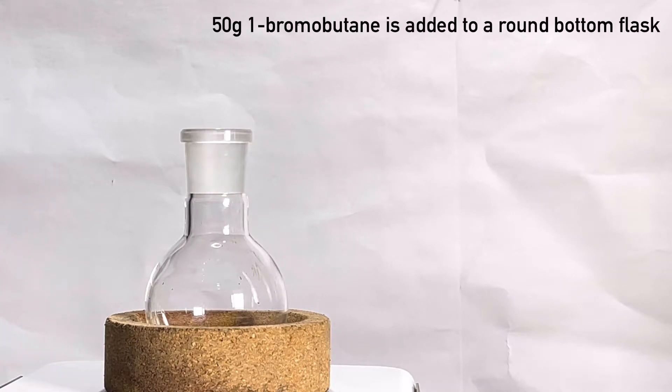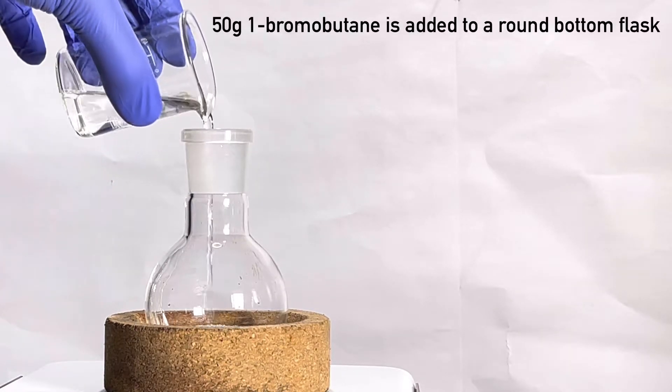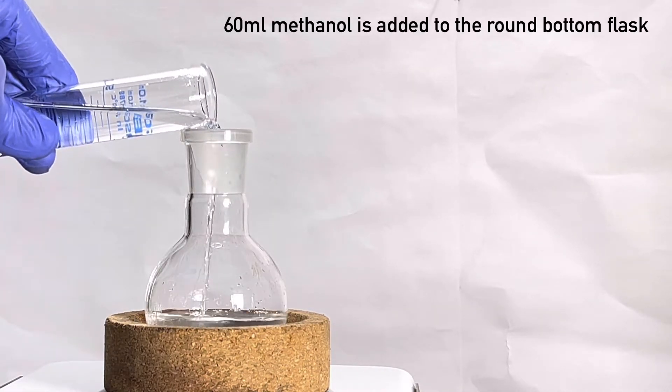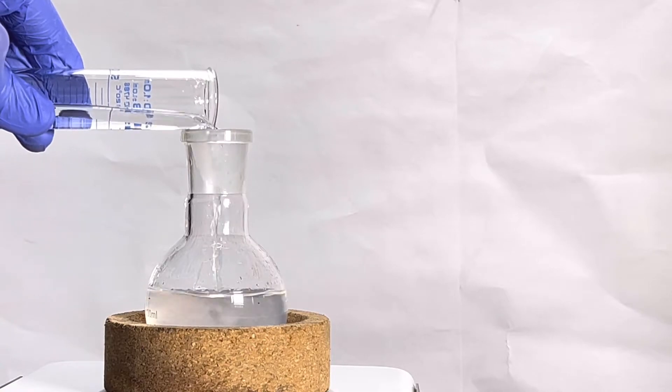Next we take another round bottom flask and add 50 grams of 1-bromobutane to it. 1-bromobutane was synthesized in one of my previous videos and link to that is provided in the description.